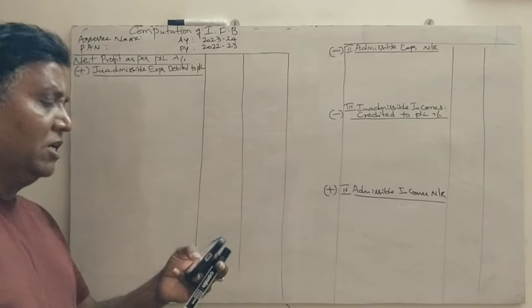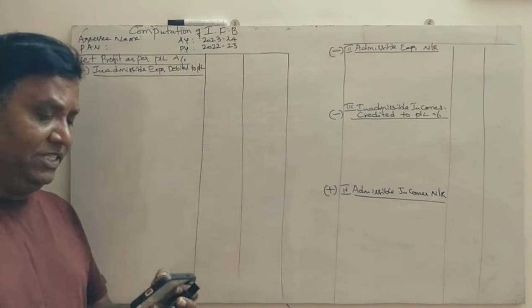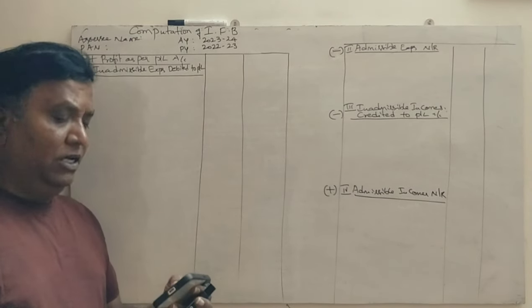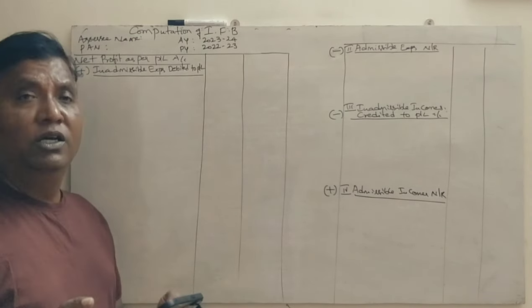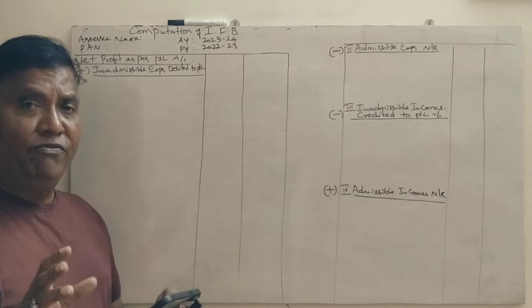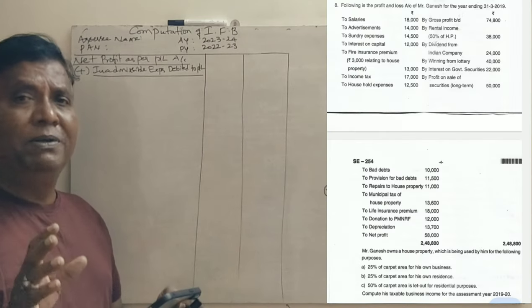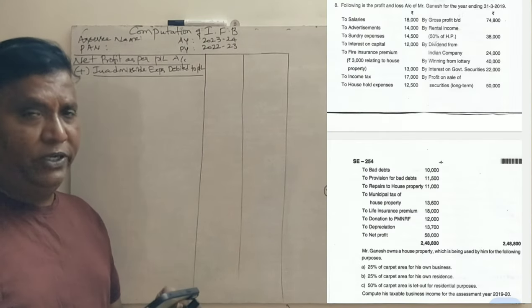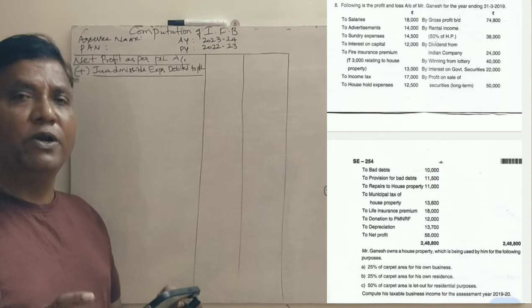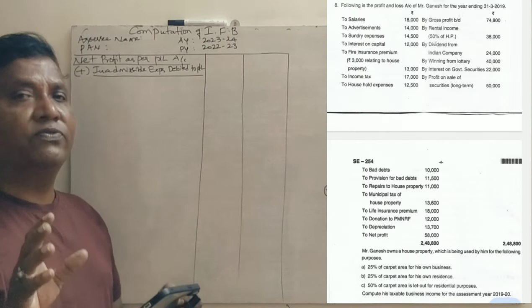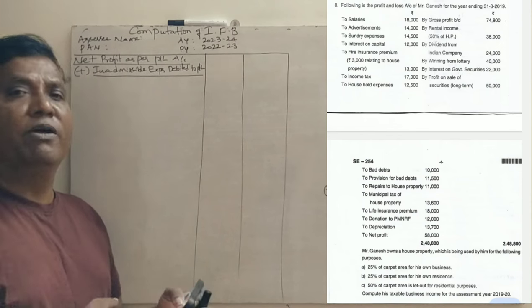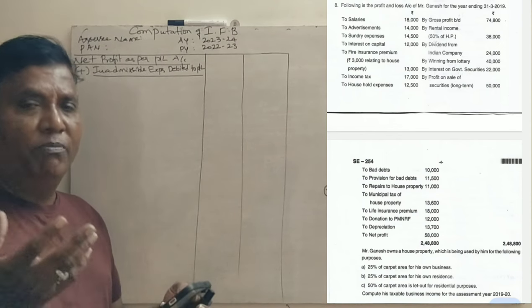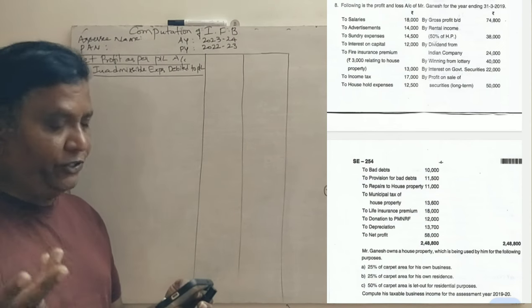Hi students, welcome to Sai Study Circle. Now we have income from business or profession — profits or gains from business or profession.